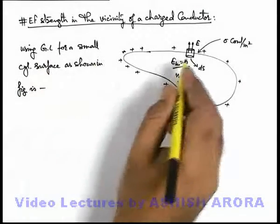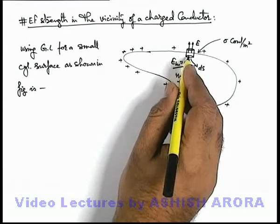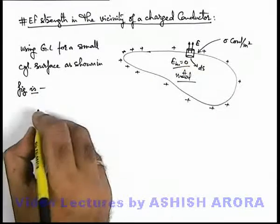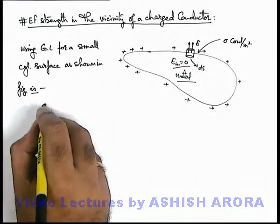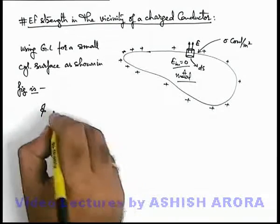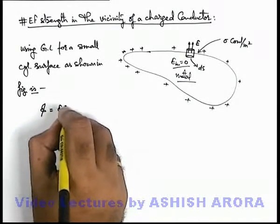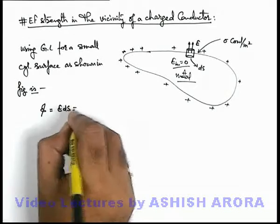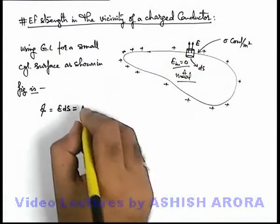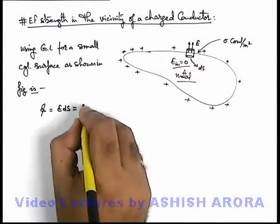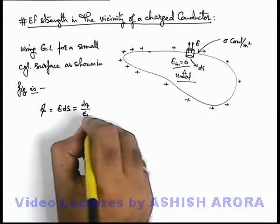If we apply this Gauss law over here, then according to this figure, we can simply write that the flux which is coming out from this Gaussian surface will be E d-s, and the value must be the enclosed charge by epsilon not, and the charge enclosed here can be written as d-q by epsilon not.